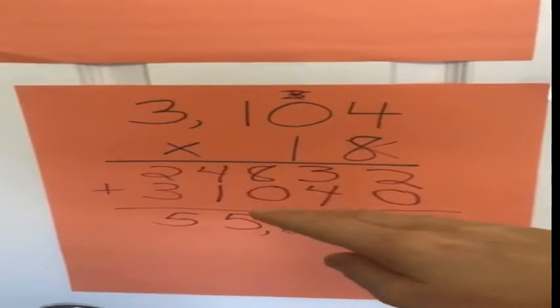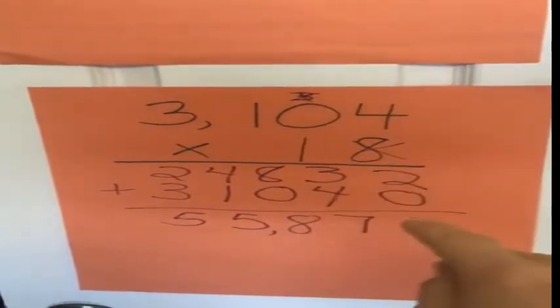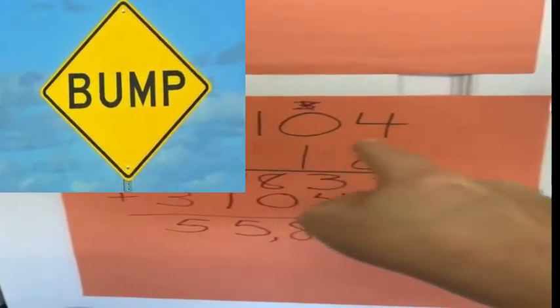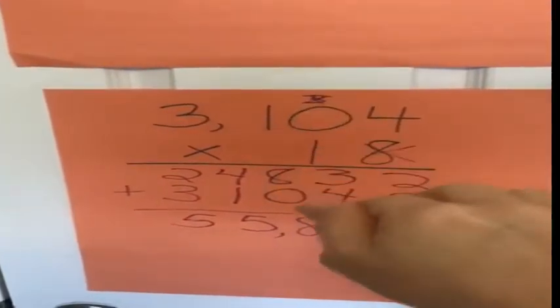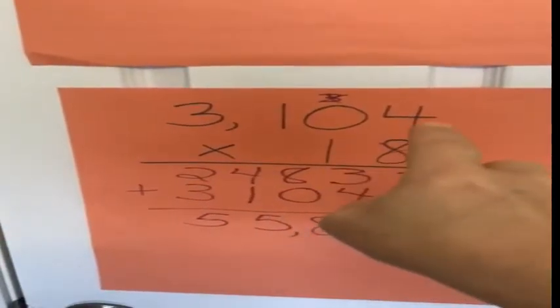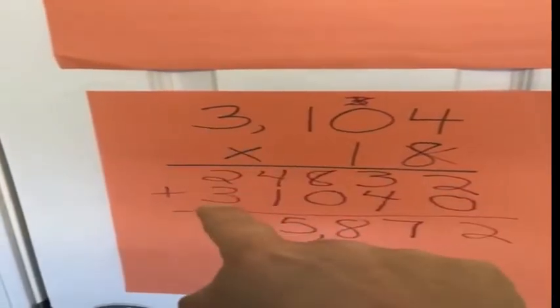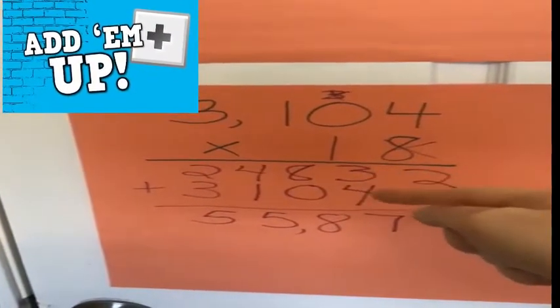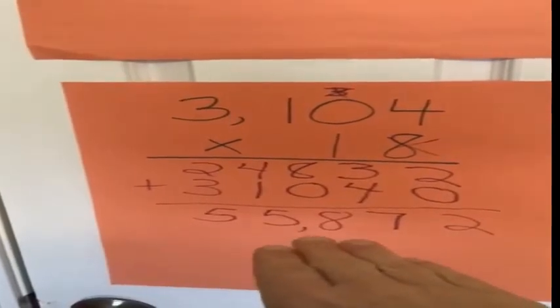Now I move to the next row — the one. I put my placeholder zero in the ones place so I don't forget about that four. Then I do tens times ones: one times four is four, one times zero is zero, one times one is one, and one times three is three. Now I add the two rows: two plus zero is two, three plus four is seven, eight plus zero is eight, four plus one is five, two plus three is five. The answer is fifty-five thousand eight hundred seventy-two.